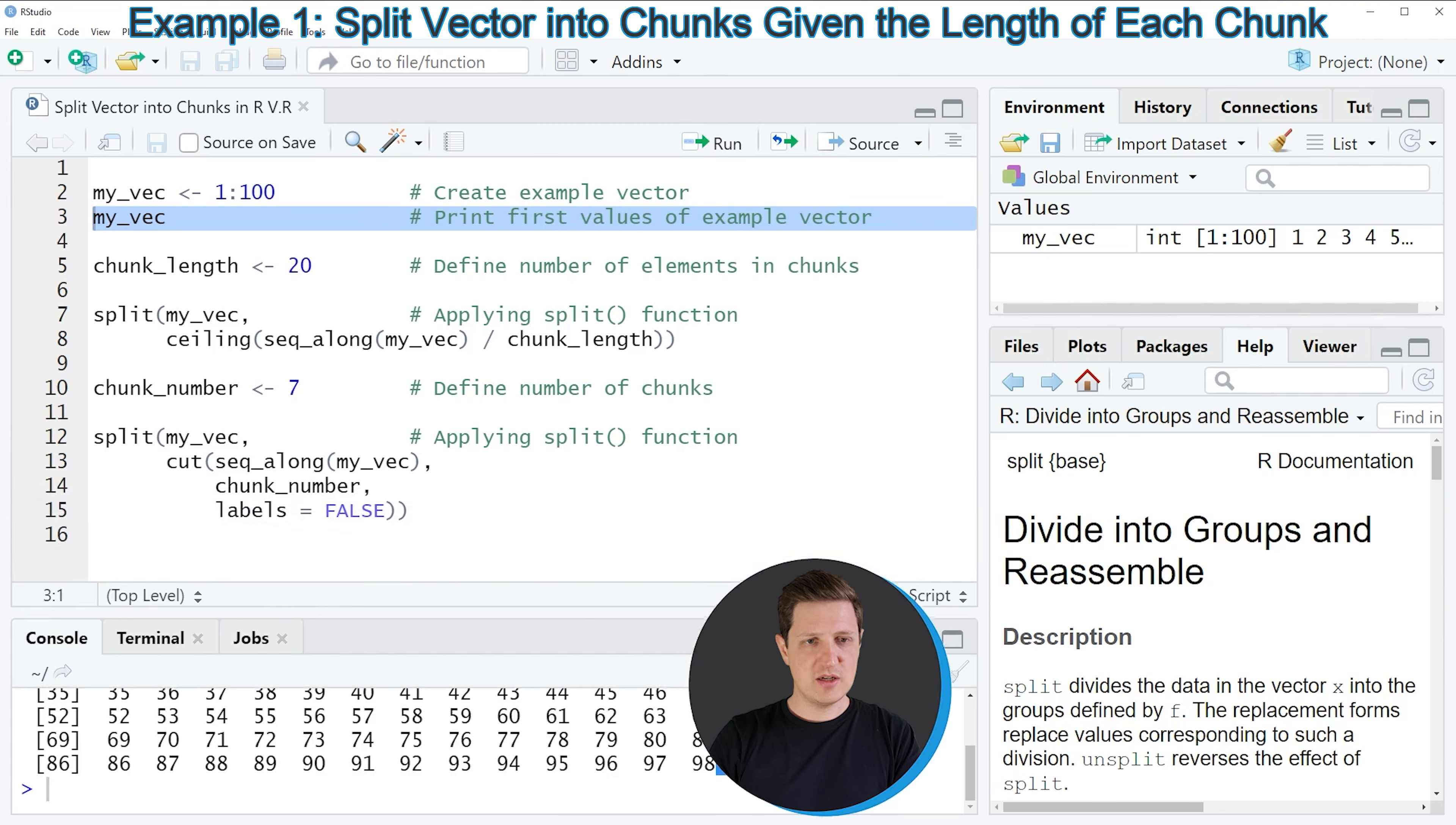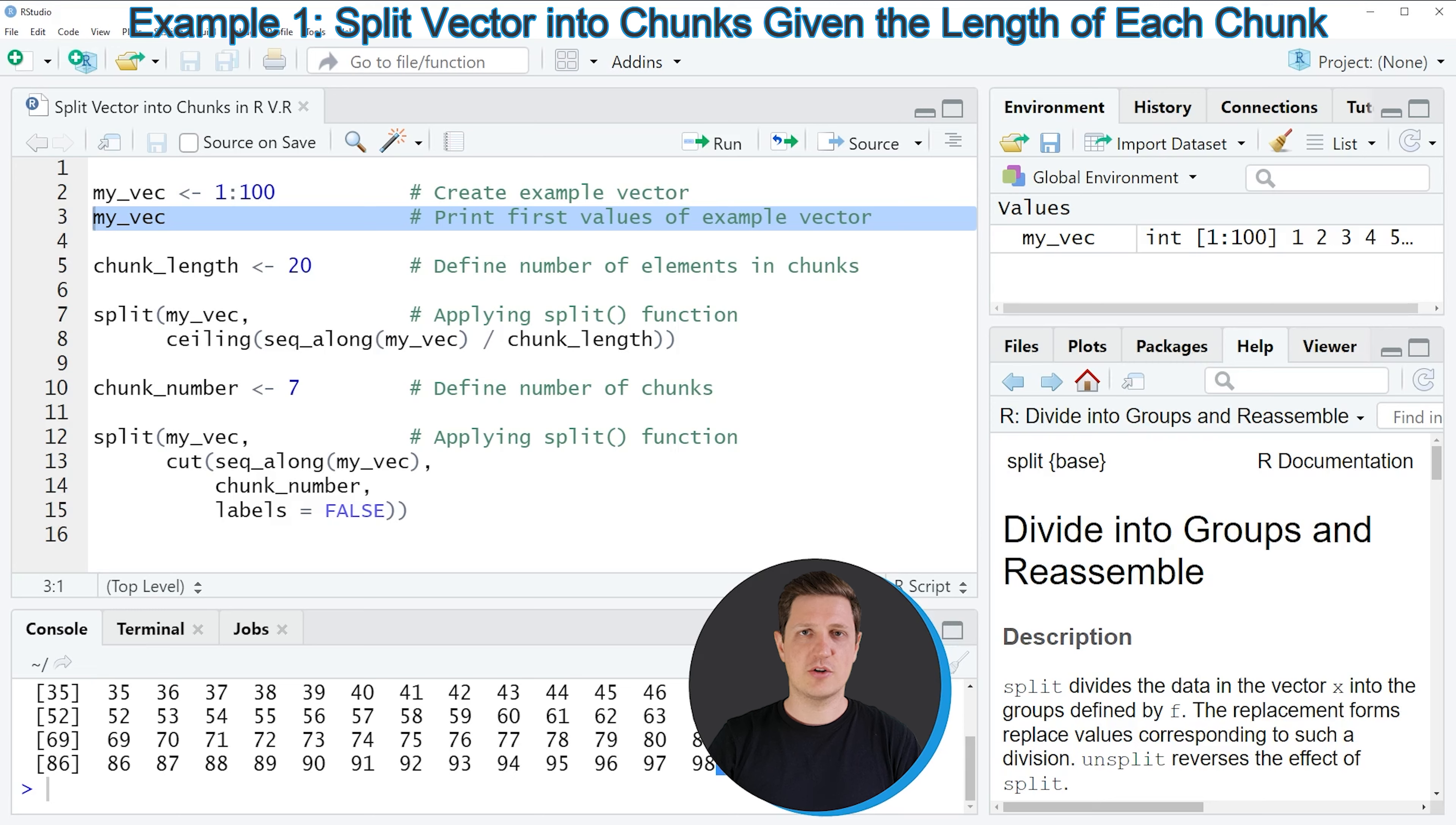If we want to split this vector into chunks with a certain amount of elements, then we first need to define the number of elements that each chunk should contain. In this case we are defining that we want to create chunks with 20 elements each. So to do that, we first need to define a new data object with the number of elements in each chunk.